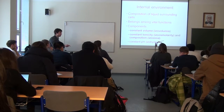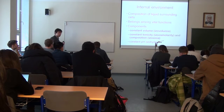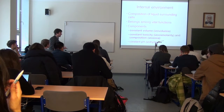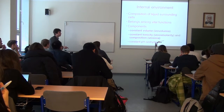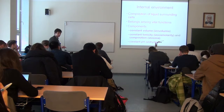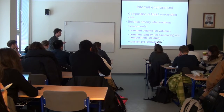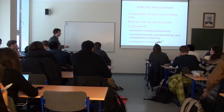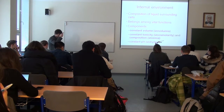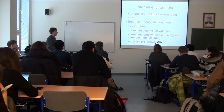Our cells want this internal environment to be stable. They want constant volume of this fluid — we call that isovolumia. There should be constant osmolarity or tonicity, meaning iso-osmolarity. Stable ionic composition means iso-ionia. The fourth balance is constant concentration of hydrogen protons — constant pH — called iso-hydria. In this lecture we will speak about these three balances: stable volume, stable osmolarity, and stable ionic composition.